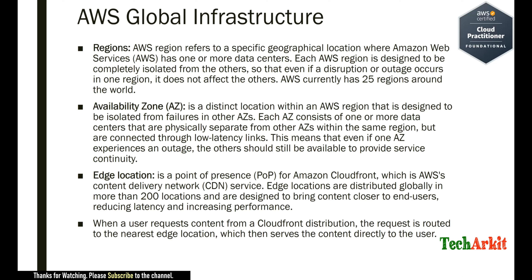For example, in the Asia Pacific or ASEAN region, AWS has the Mumbai region. The Mumbai region has multiple data centers and multiple availability zones. Those regions contain multiple availability zones, and each availability zone contains multiple data centers.